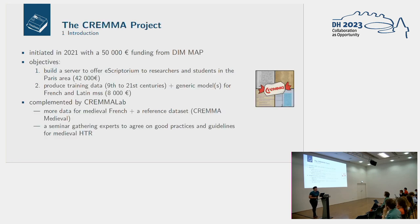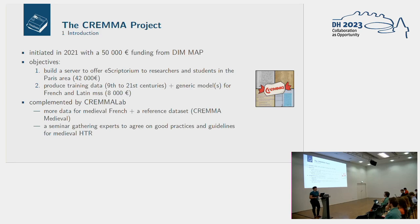In 2021 we had funding from the DMAP, which is a Parisian institution, to fund two things. The main one was to buy and build a server to host Scriptorium as a web application to give access to researchers and students from the Paris area. The second part of the project was to produce training data covering a period going from the 9th century to nowadays in order to create generic models for French and Latin manuscripts.